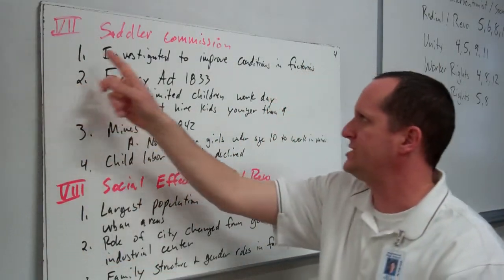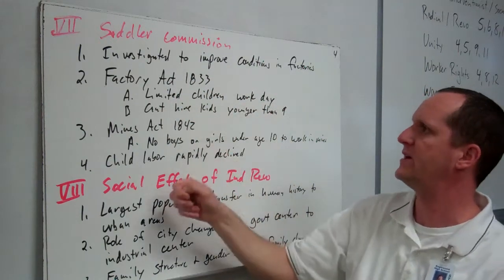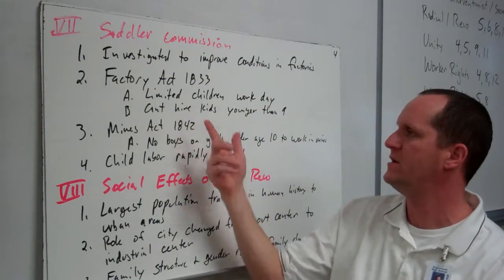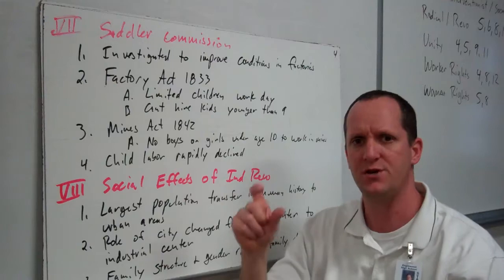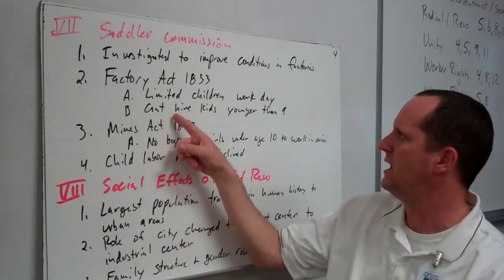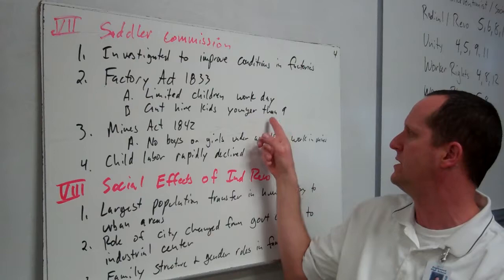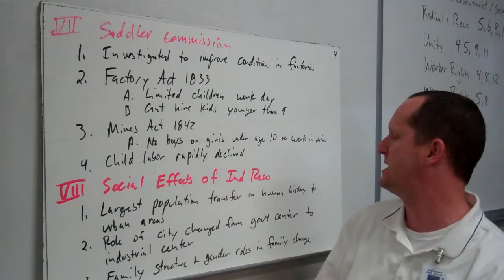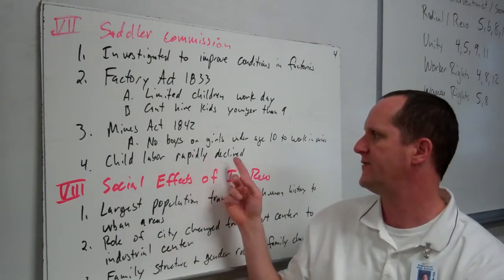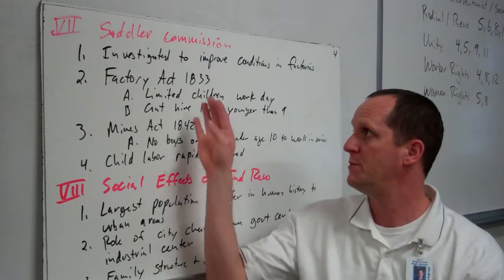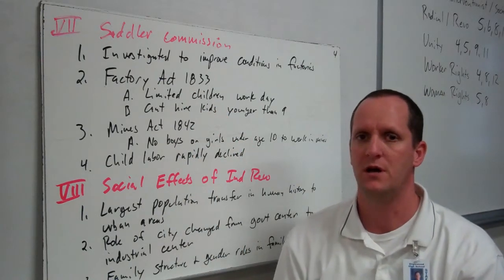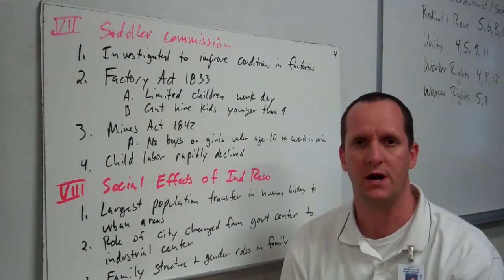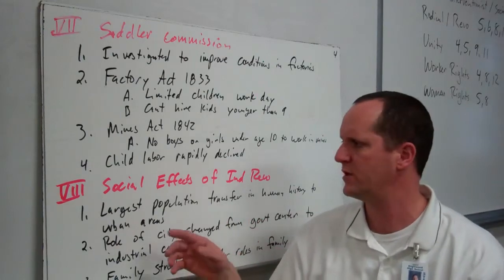The Sadler Commission investigated to improve conditions in the factories. The Factory Act of 1833 limited children's work days — if you were of a certain age, you could only work so many hours — and prohibited hiring children younger than nine. The Mines Act of 1842 prohibited boys or girls under the age of ten from working in mines. Child labor after this rapidly declined. Before these acts, children were often used in horrible conditions that deteriorated their health — they died, were malnourished, and never really grew up.